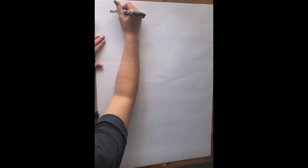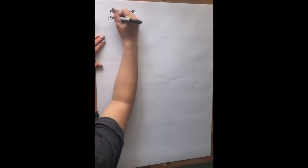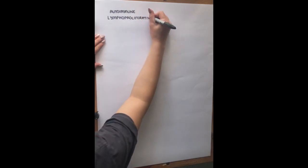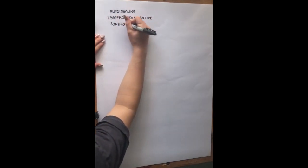So firstly, I'm just going to break down the name autoimmune lymphoproliferative syndrome. It's also known as ALPS, so that's an easier way to remember it and it is a quite hard name to say.